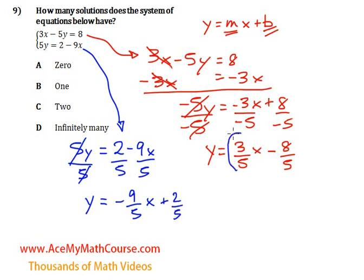Now, the slope of the first line is 3 over 5. The slope of the second line is negative 9 over 5. If the slopes are different, we immediately know one thing. We have exactly one solution for the system of equations. That's it.